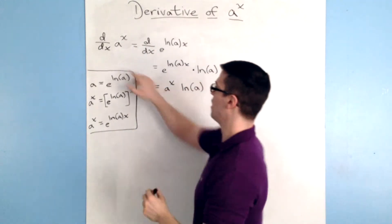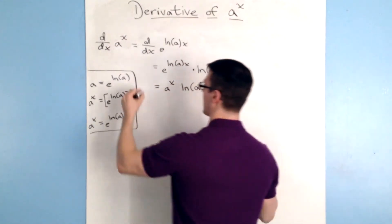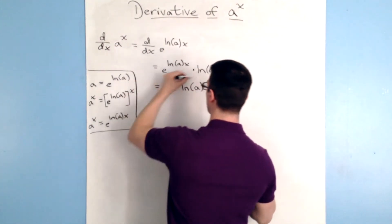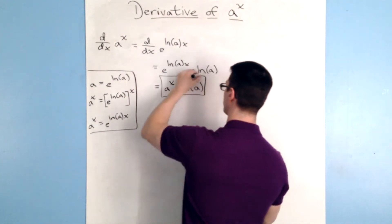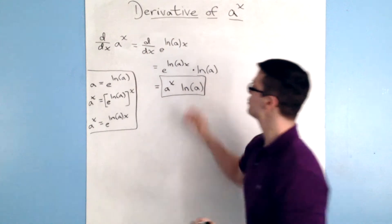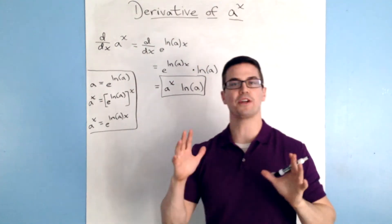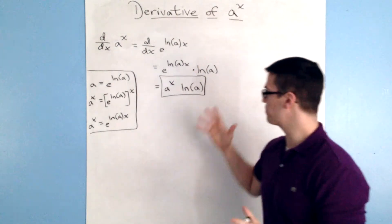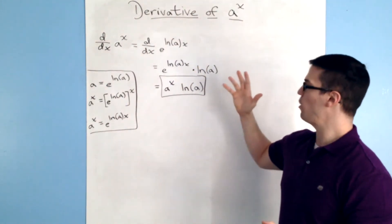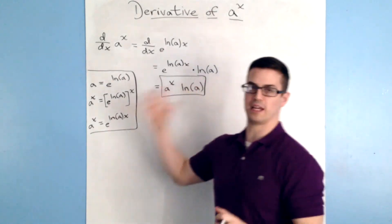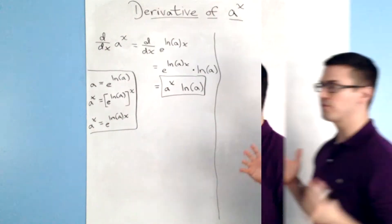Now from here, I'm going to back-substitute. I know that e to the ln a times x is equal to a to the x power, so I'm going to substitute that in: a to the x power times ln a. So the derivative with respect to x of a to the x is equal to a to the x times ln a. That's the derivative of a to the x. Now we're going to use this same principle for the anti-derivative.